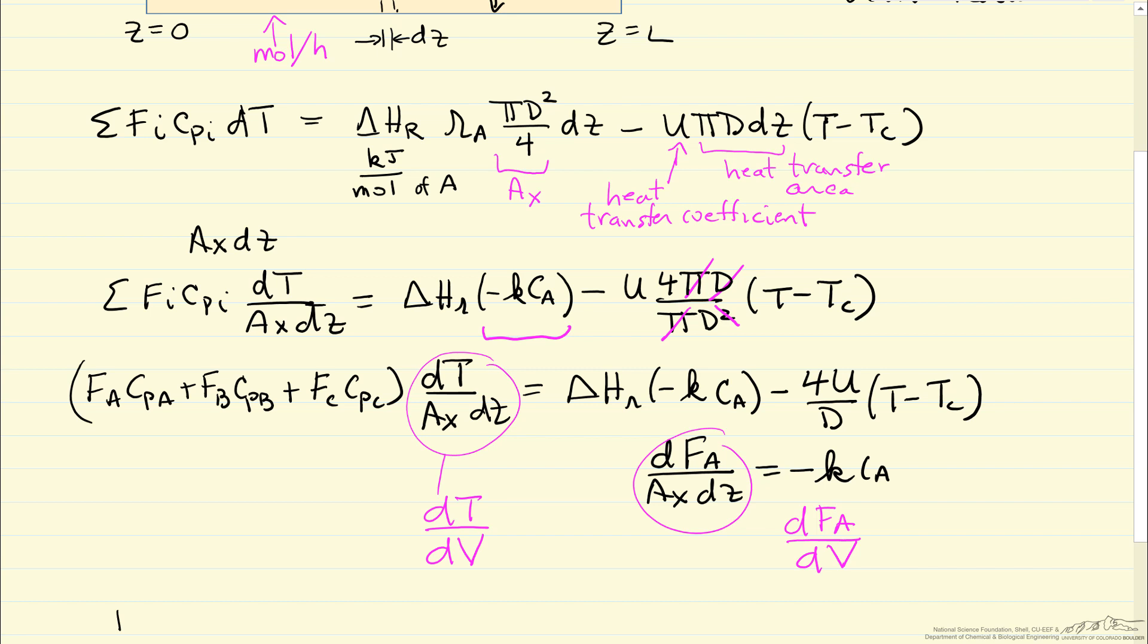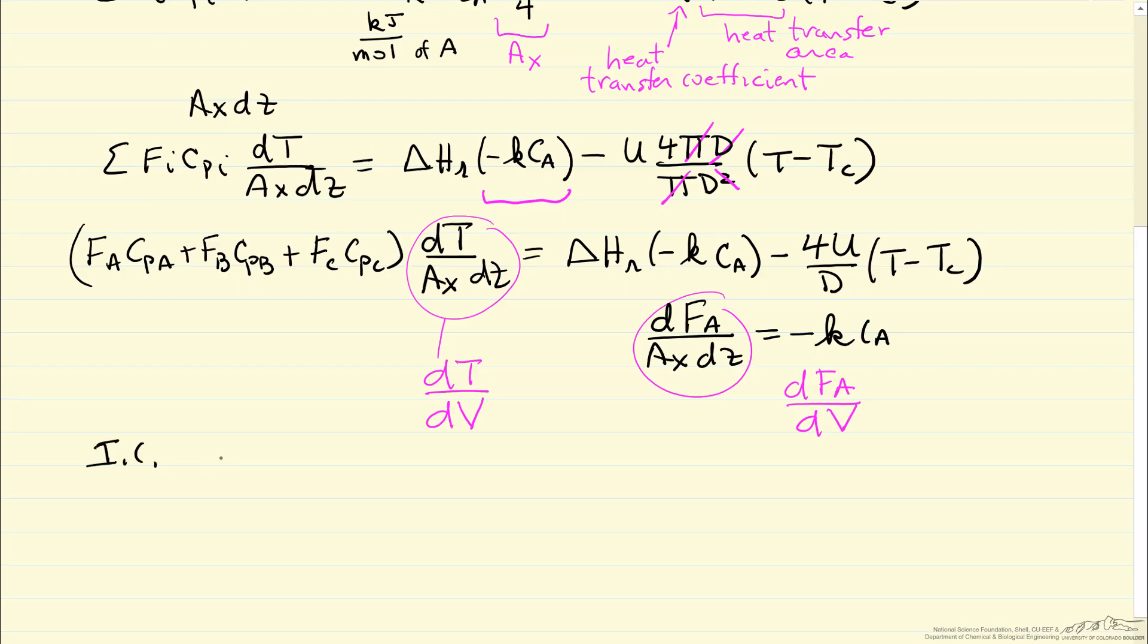Now to solve these equations, we need initial conditions, and initial conditions mean at the reactor inlet. So at z equals zero, we'd have temperature coming in, the reactor T zero, we'd have the flow rate of each of the components as the inlet flow rate.